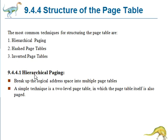The first one is hierarchical paging. Most modern computer systems support a large logical address space, that is 2 power 32 to 2 power 64. In such an environment, the page table itself becomes excessively large. For example, consider a system with a 32-bit logical address space. If the page size in such a system is 4 KB, that is 2 power 12, then a page table may consist of up to 1 million entries, that is 2 power 32 divided by 2 power 12.